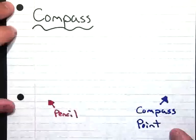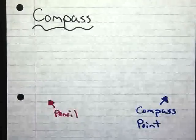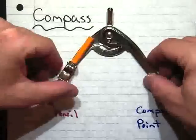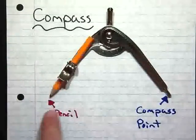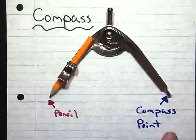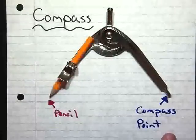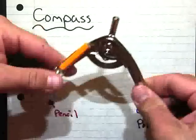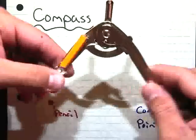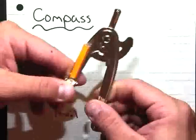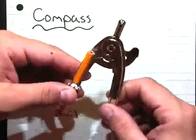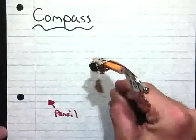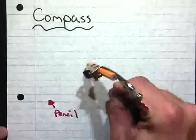Before we begin, let's go ahead and take a look at what a compass is and what the parts are of a compass. You can see here that I have this compass, and on one end I have a pencil, on the other end I have this middle point, which is what we call the compass point. This compass opens and closes, so that way when I construct something, I can take measurements using this, and I can use my compass point to swing and draw arcs.